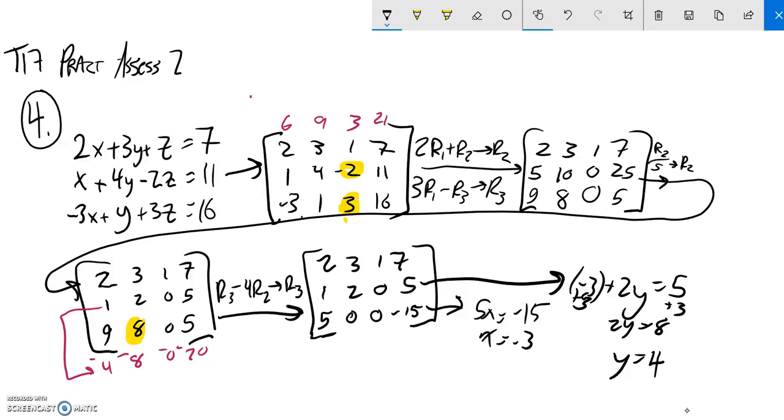And then I can use both of those pieces of information with this equation to get my Z value. So, 2 times X, X is negative 3, plus 3 times Y, plus Z equals 7. So, this is a negative 6 plus a 12. And that's a 6 plus Z. That looks like Z is 1.